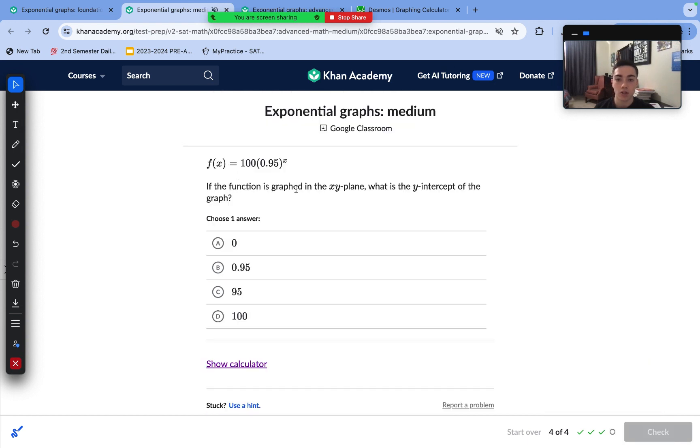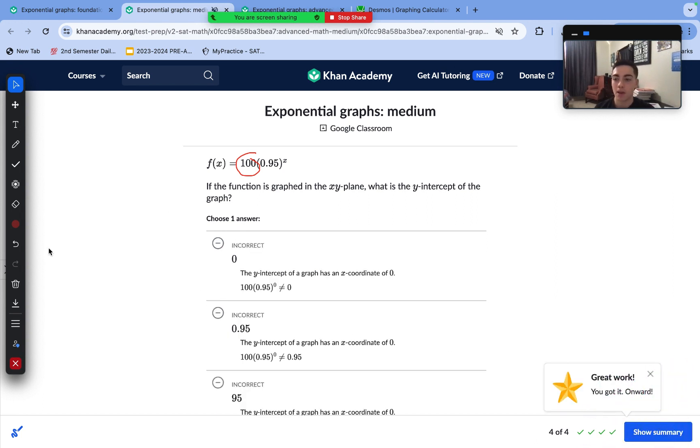If the function is graphed in the xy-plane, what is the y-intercept? With A(B^x), A is the y-intercept, so that means the y-intercept is just answer choice D, or 100. If you were not sure of this, just substitute 0 in for x, and the corresponding y-value is our y-intercept. You'll see that it will still be 100.